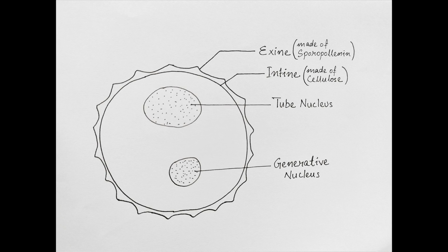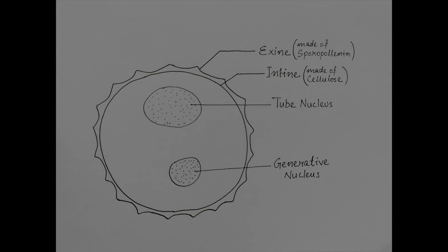The sporopollenin coating protects the pollen grains as they are transported from the stamen or male cone to the pistil or female cone in a process known as pollination.